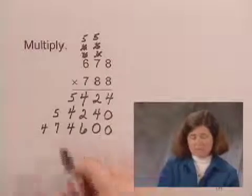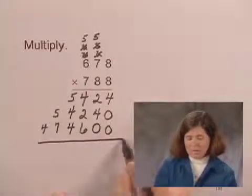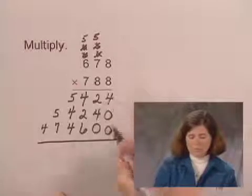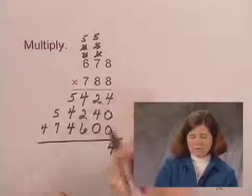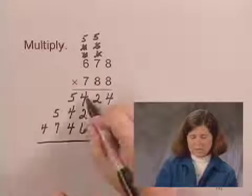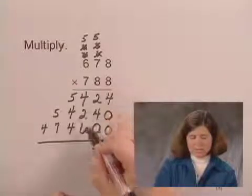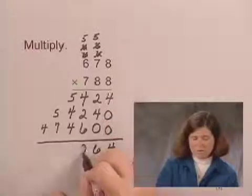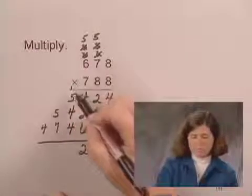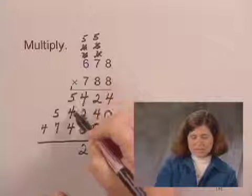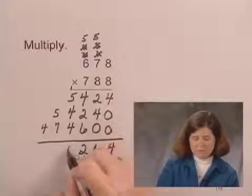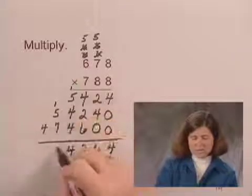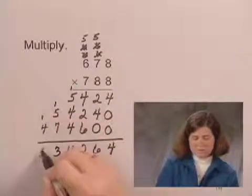Notice I've lined up the numbers so that I can add them up neatly. I add three numbers here. 4 plus 0 plus 0 is 4. 2 plus 4 is 6. 4 plus 2 is 8. 4 plus 2 is 6, plus 6 is 12. 1 plus 5 is 6, plus 4 is 10, plus 4 is 14. 1 plus 5 is 6, 6 plus 7 is 13. And 1 plus 4 is 5.